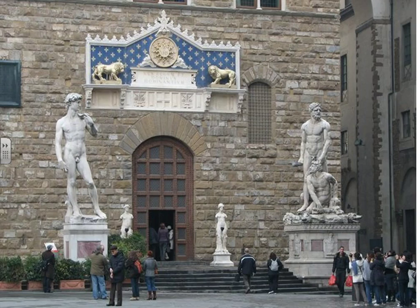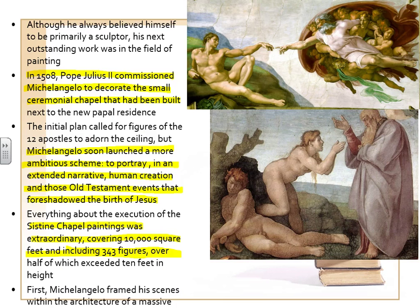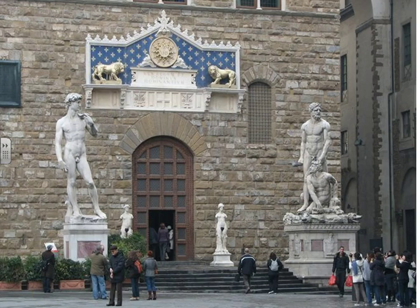What is similar to Donatello's David is the contrapposto stance, as if to suggest he is getting ready to spring into action. The original is now inside a museum in Florence, but a duplicate has been erected in the piazza.